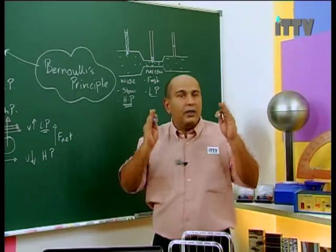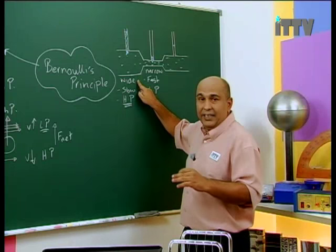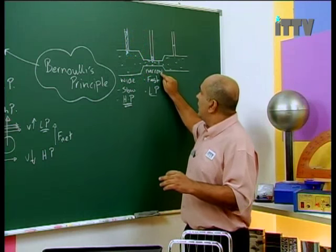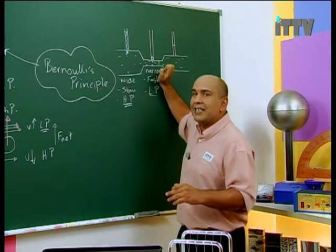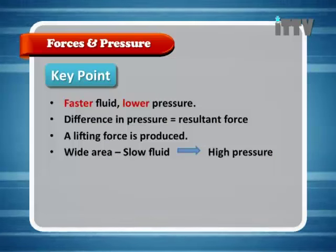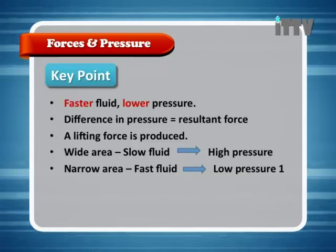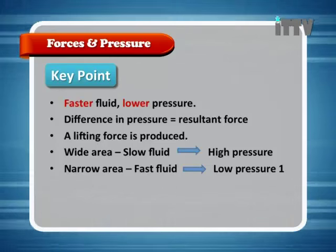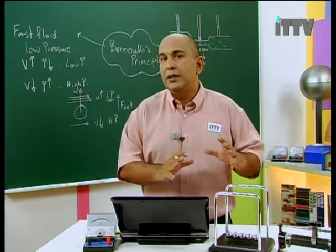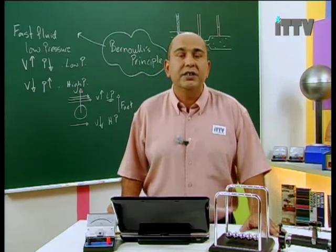Understand how the size or area of the tube affects the water levels. Wide: slow fluid, high pressure — pushes the fluid up. Narrow: fast fluid, low pressure — can't push the fluid up enough. The keys to Bernoulli's Principle are: fast fluid, low pressure; slow fluid, high pressure. You need to identify these situations when you come across them.